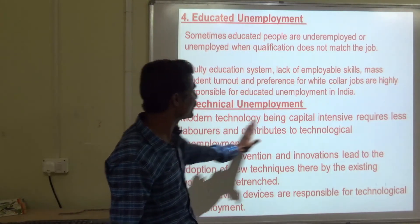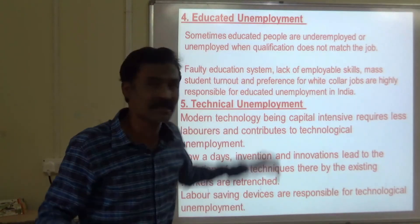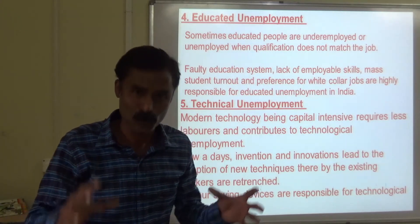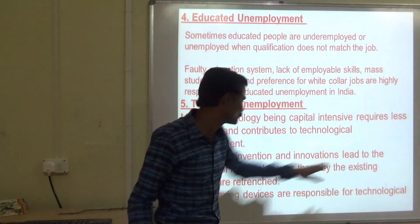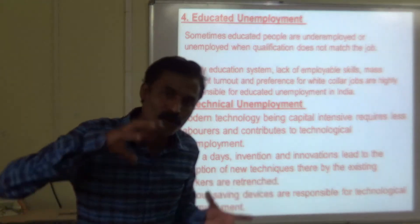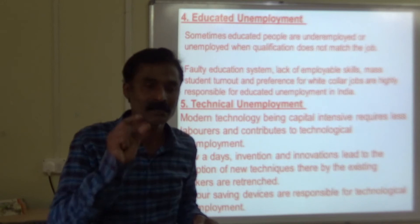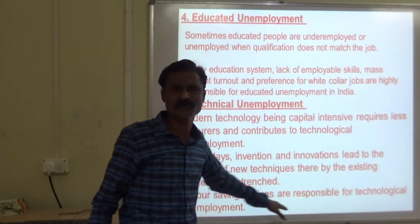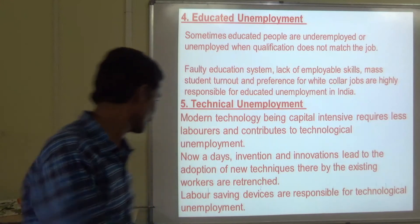Next is technical unemployment. Modern technology being capital-intensive requires less labor. For example, in car manufacturing we will never find many employees — everything is done by robots. Less manpower, more machinery, more technology. Innovation is linked to the adoption of new techniques, whereby existing workers are displaced. Due to more technology and science, less manpower and more machinery is used. CNC — computerized numerical machines — are used in car manufacturing. Labor-saving devices are responsible; companies think that if a machine can do the work, they do not need to pay laborers.